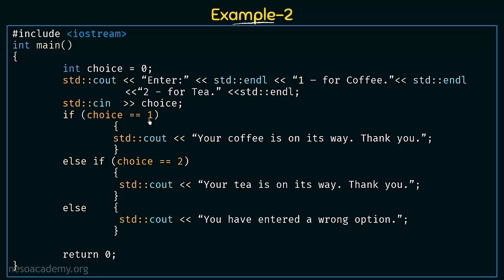If choice equals 1, that means the user ordered coffee, so we print 'your coffee is on its way, thank you.' Then we write else if choice == 2 — if choice equals 2 the user chose tea, so we print 'your tea is on its way, thank you.' These are the only two valid choices. If the user entered any other value, it falls into the else block where we print 'you have entered a wrong option.' So if choice equals 1 we do the coffee message, else if choice equals 2 we do the tea message, else we print the wrong option message.